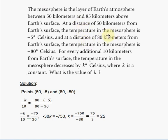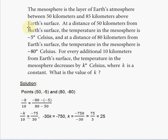The first point uses the distance of 50 kilometers and temperature of minus 5 degrees Celsius, giving us the point (50, -5). The second point uses a distance of 80 kilometers and temperature of minus 80 degrees Celsius, giving us the point (80, -80). The temperature is dependent on the distance in both cases.